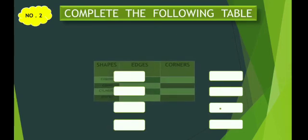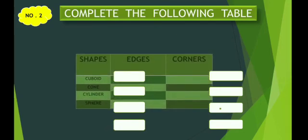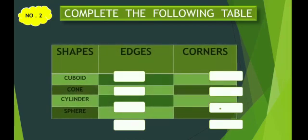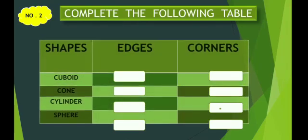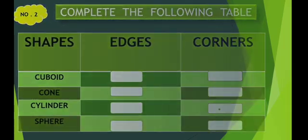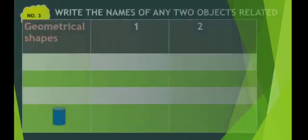Now the second activity is complete the following table. Now children, what you have to do is shapes will be given to you and you are supposed to write the edges and corners of those shapes.